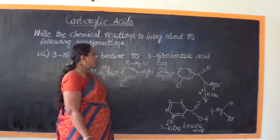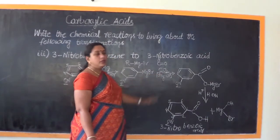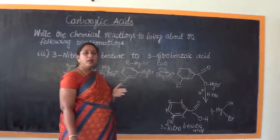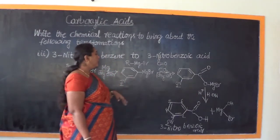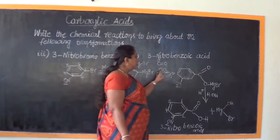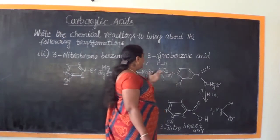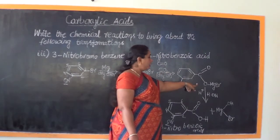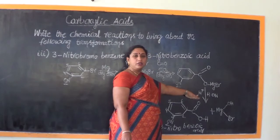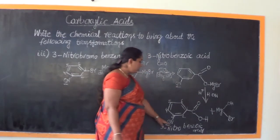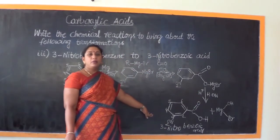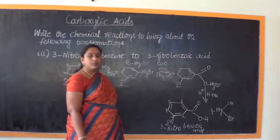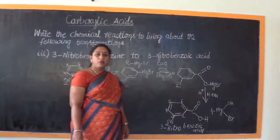This Grignard compound was then subjected to treatment with dry ice, that is carbon dioxide. From here it follows the general method we have learnt for obtaining a carboxylic acid from a Grignard reagent. The dry ice addition compound is then subjected to acid hydrolysis to obtain the final product — 3-nitrobenzoic acid — the product of our requirement.